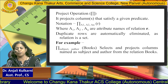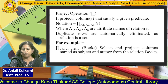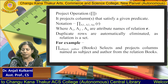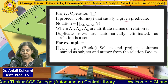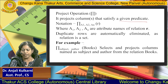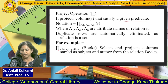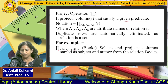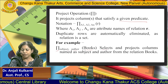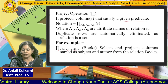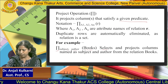Now, the project operation. The project operation projects the columns that satisfy a given predicate. For example, we project the columns subject and author from the relation Books. So we select and project only those column names — subject and author — from the Books relation.